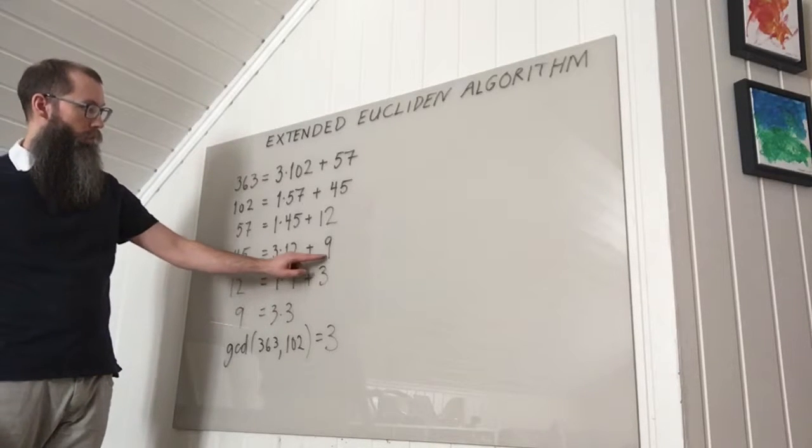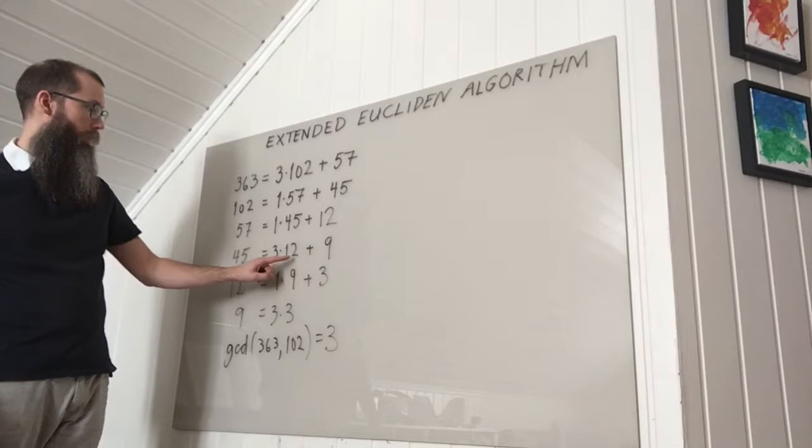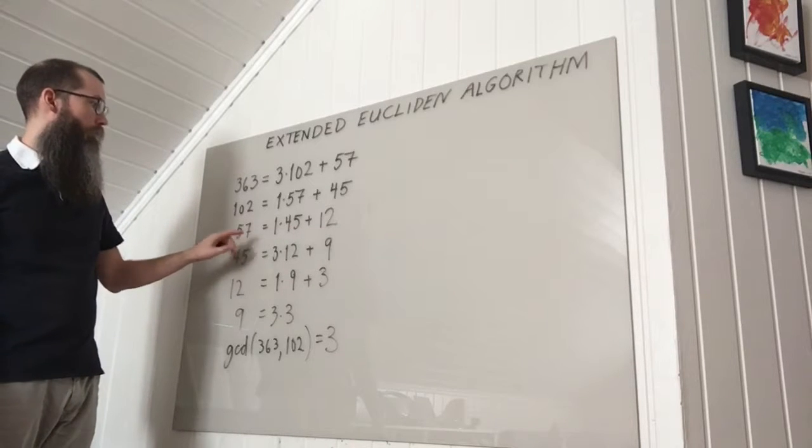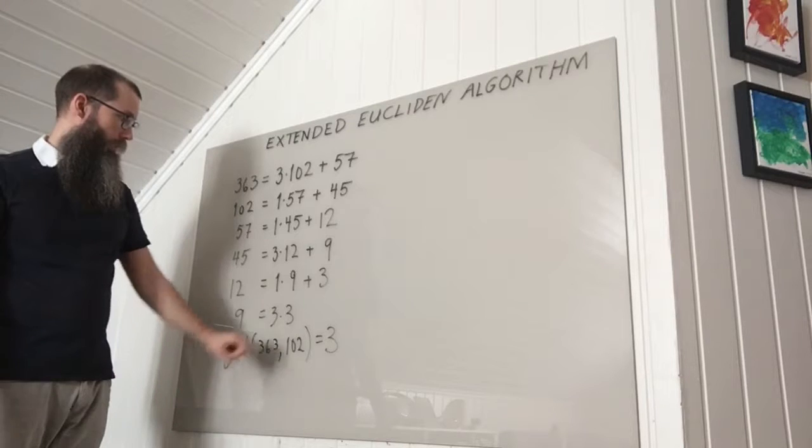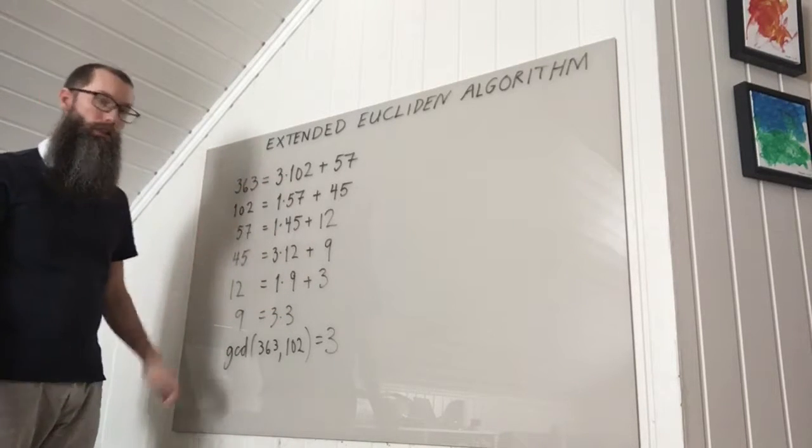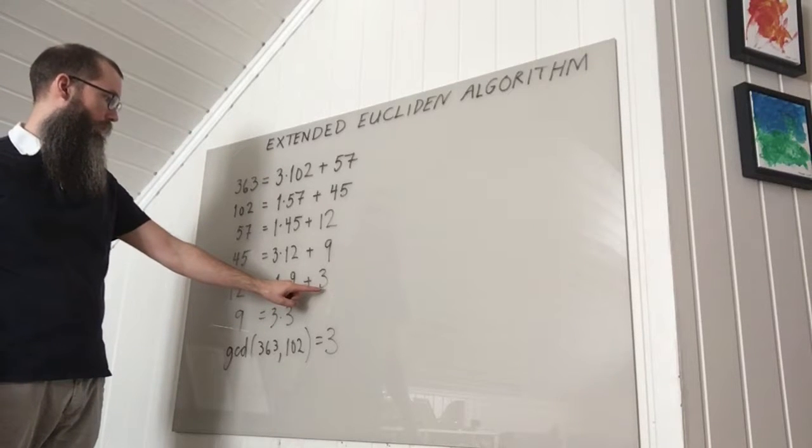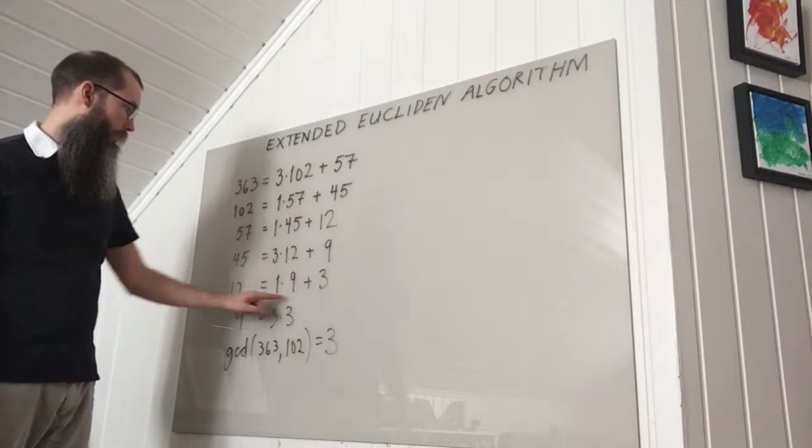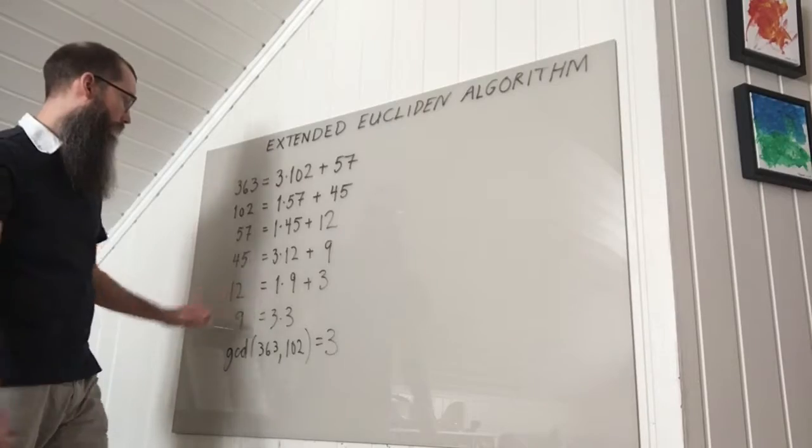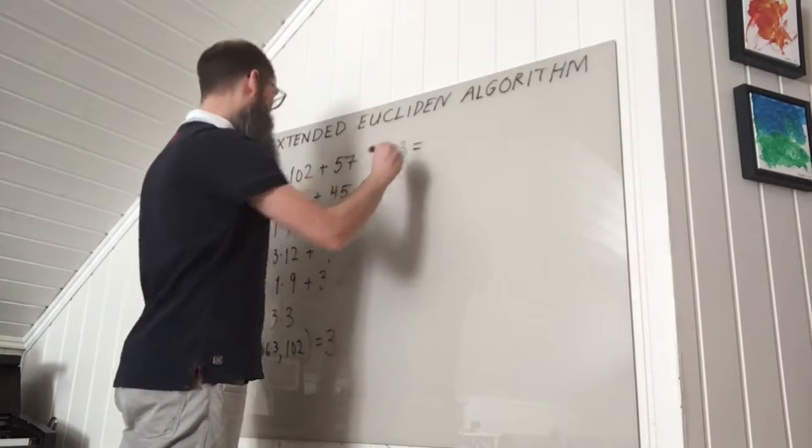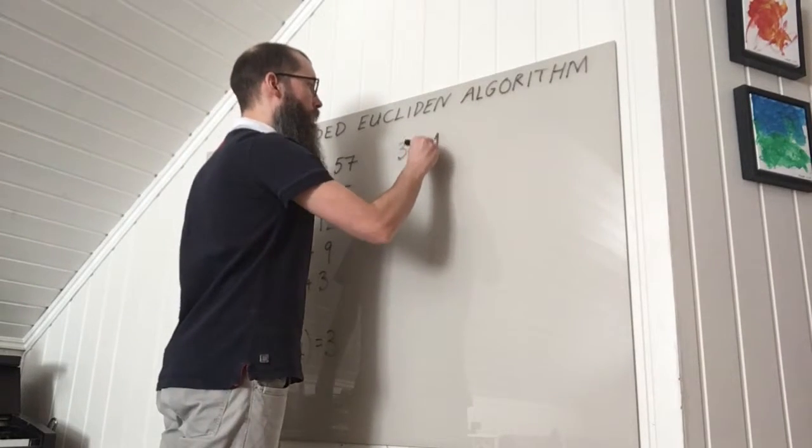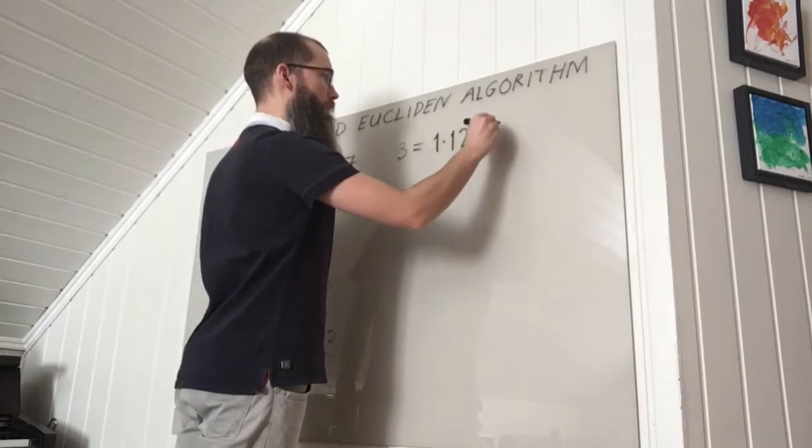And then using the line above to express 9 as a linear combination of 12 and 45. Then expressing 12 as a linear combination of 45 and 57 and so on and arrive at 3 as a linear combination of these two in the end. So I start by expressing 3 by using this equation. So I subtract this term from both sides and that gives me 3 equals 12 minus 1 times 9. So it's 1 times 12 minus 1 times 9.